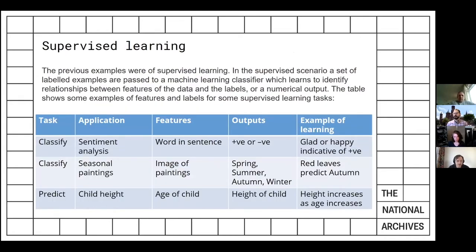Those are examples of supervised learning, where we take past examples and pass them to a classifying algorithm, which learns patterns in the data to predict outputs. Classification tasks include sentiment analysis — working out if reviews are positive or negative. You give a set of features (the words in each review) and tell it the labels. The algorithm might learn a correlation between words like 'happy' and 'glad' and the positive class. Or you could take paintings and predict labels for them, while a prediction task might take numerical data like a child's age to predict their height.